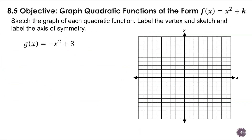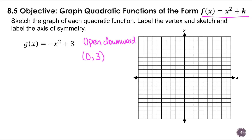So let's take a look at this one. Notice that this has a negative x-squared, so that means it's going to open downward. My vertex is going to be at (0, 3). Remember, when it's written in the form f of x equals x squared plus k, that tells me my vertex is at (0, k). In this case, k is three. I can also name my axis of symmetry, and it is at x equals zero.